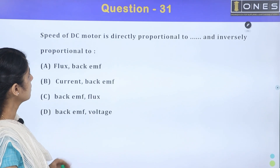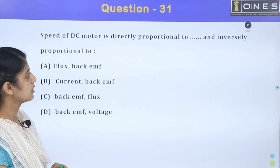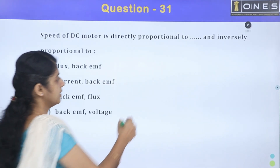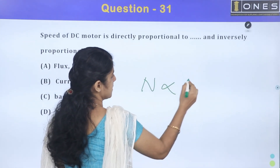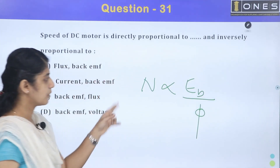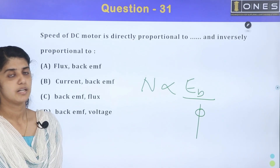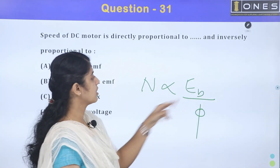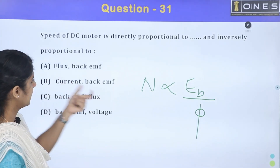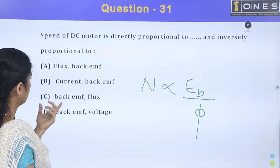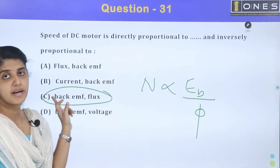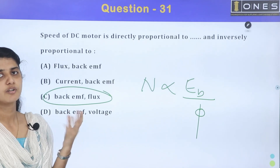Next question: speed of a DC motor is directly proportional to back EMF and inversely proportional to flux. N is proportional to Eb by φ. So directly proportional to back EMF, inversely proportional to flux. Option C.